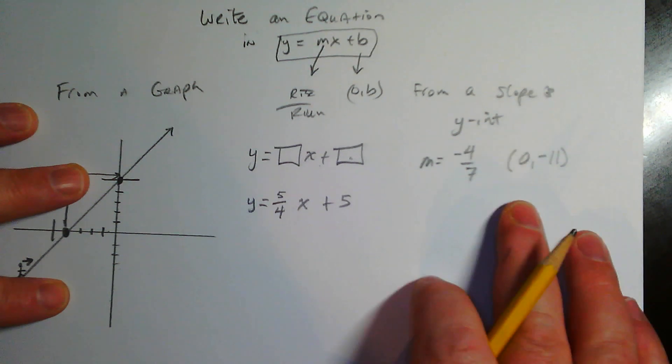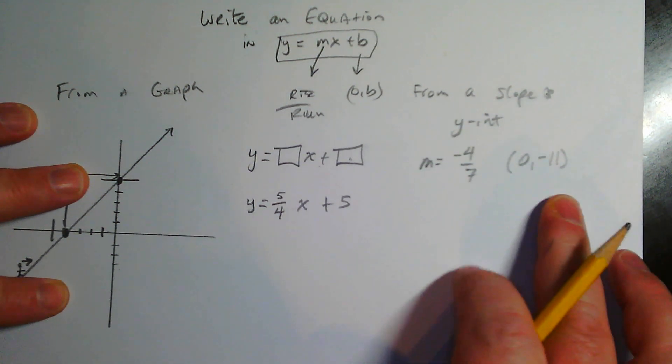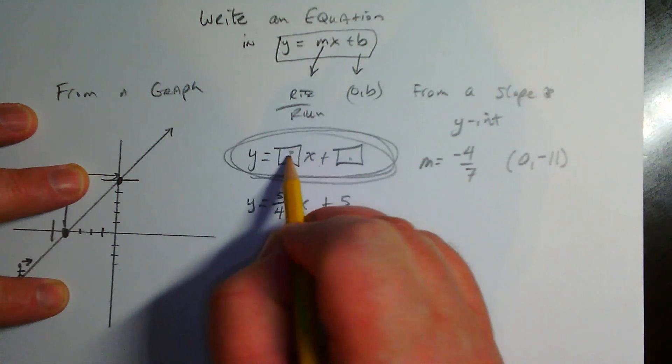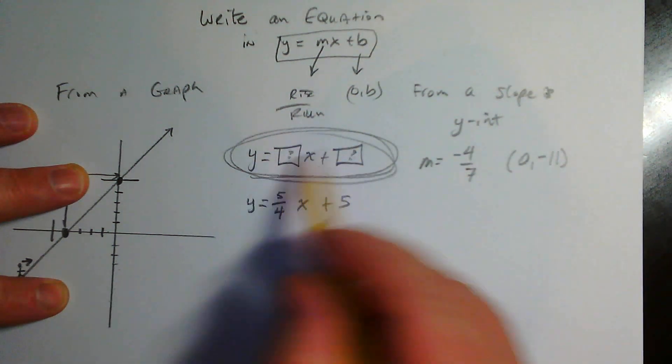...had this, and we had to write the equation of a line that has that slope and that y-intercept. Well, same exact deal - we have to figure out what are these two things right here. Doesn't matter which...